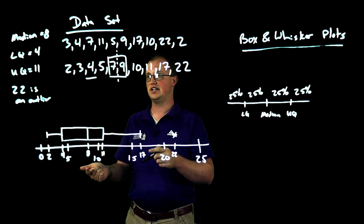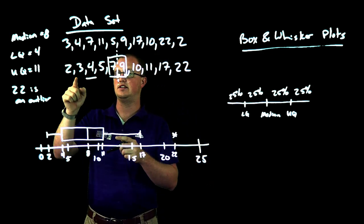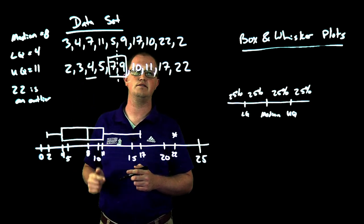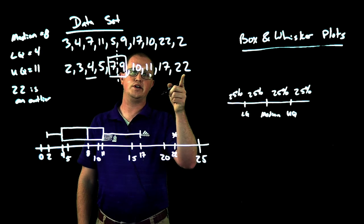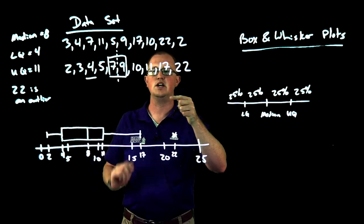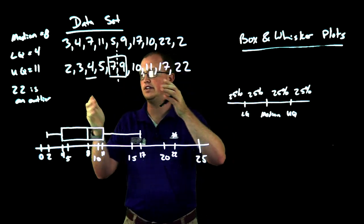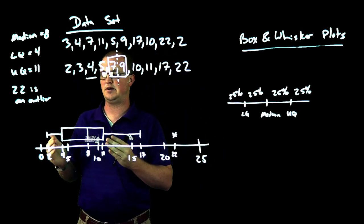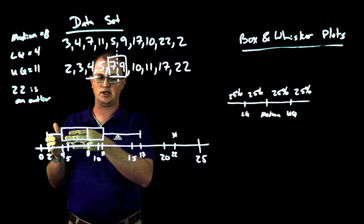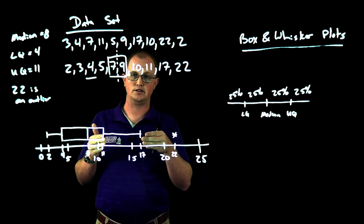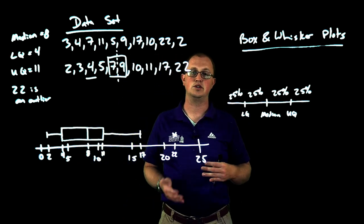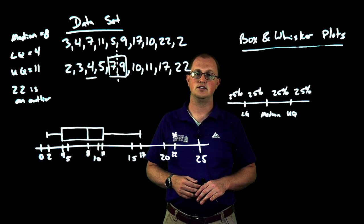Looking at our original data set, the data is pretty close together at the bottom — 2, 3, 4, 5 — but on the upper end we have 10, 11, 17, 22, which is more spread out. This is the key insight: bigger segments on the box and whisker plot do not mean more data — it's the opposite. A bigger spread means the data is more spread out, and a smaller segment means the data is more concentrated there, since each segment contains the same number of data points. We'll continue to practice in class — look forward to that.